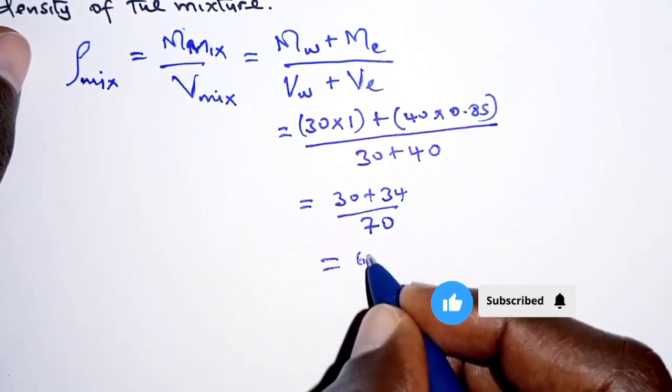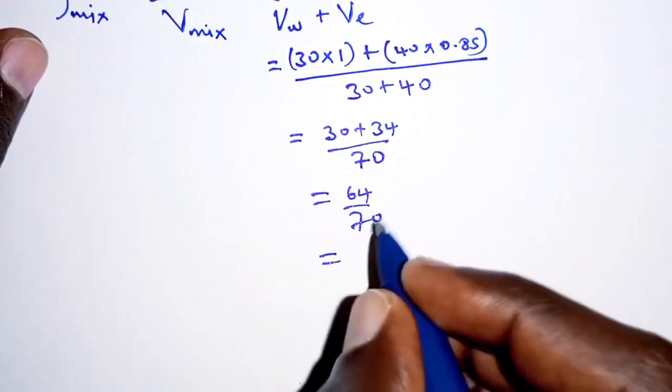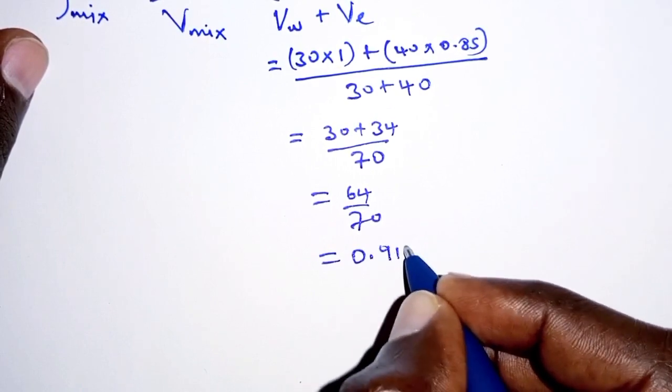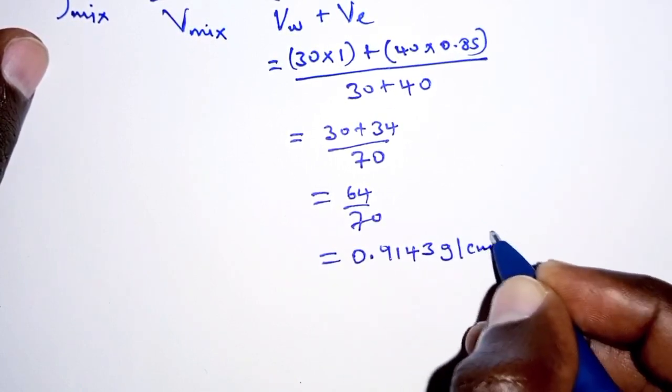So we have 64 over 70, which simplifies to 0.9143 grams per cubic centimeter.